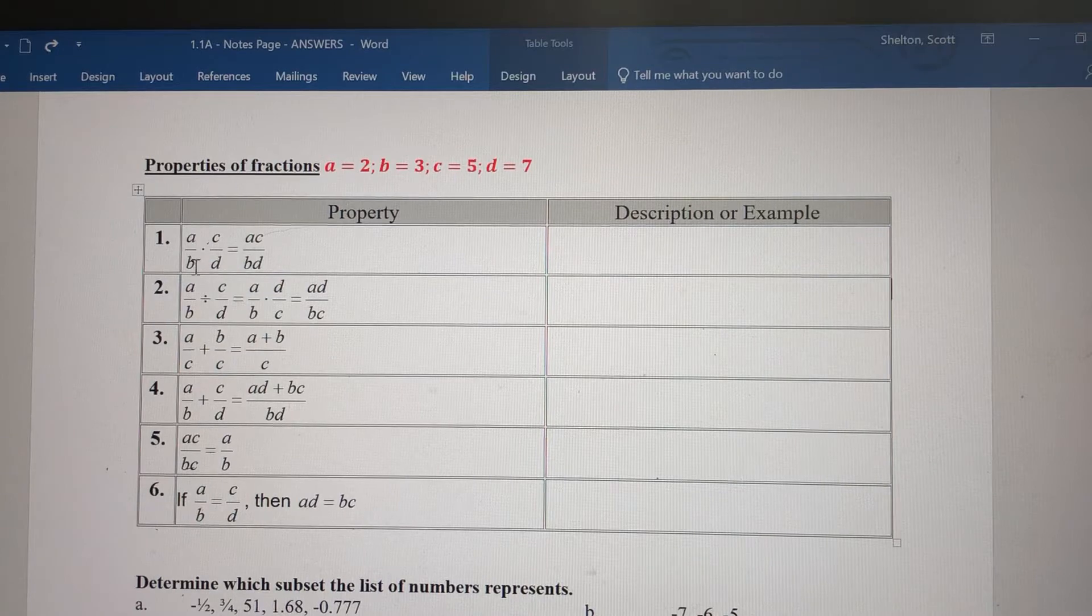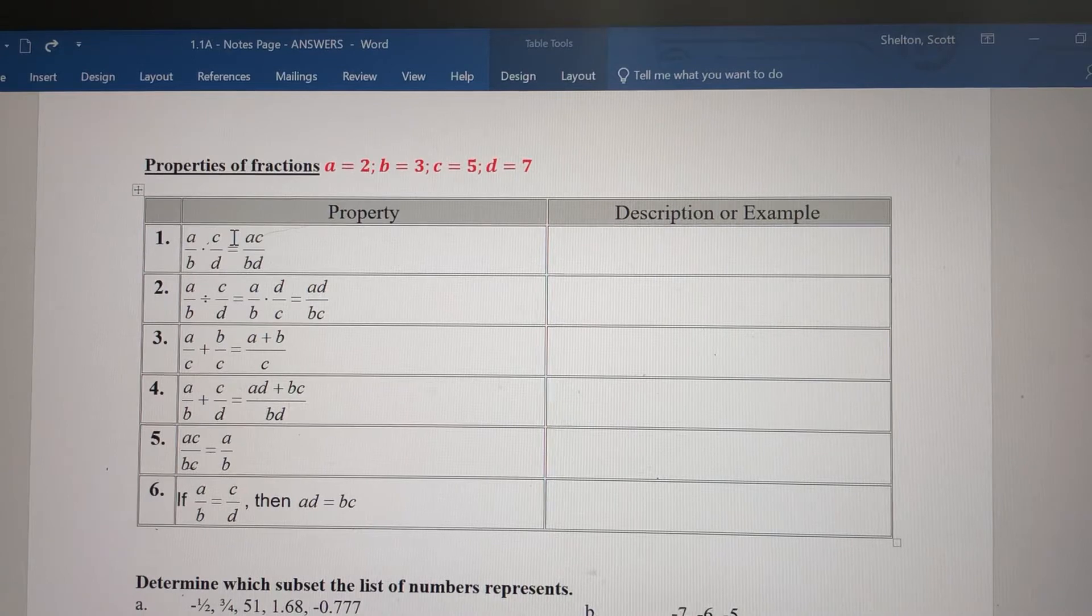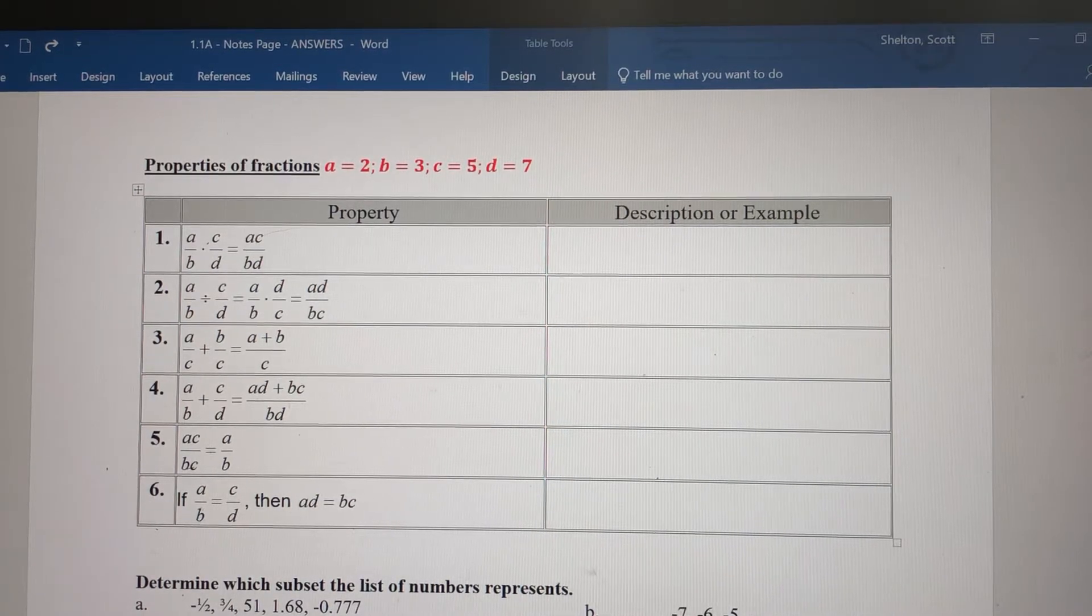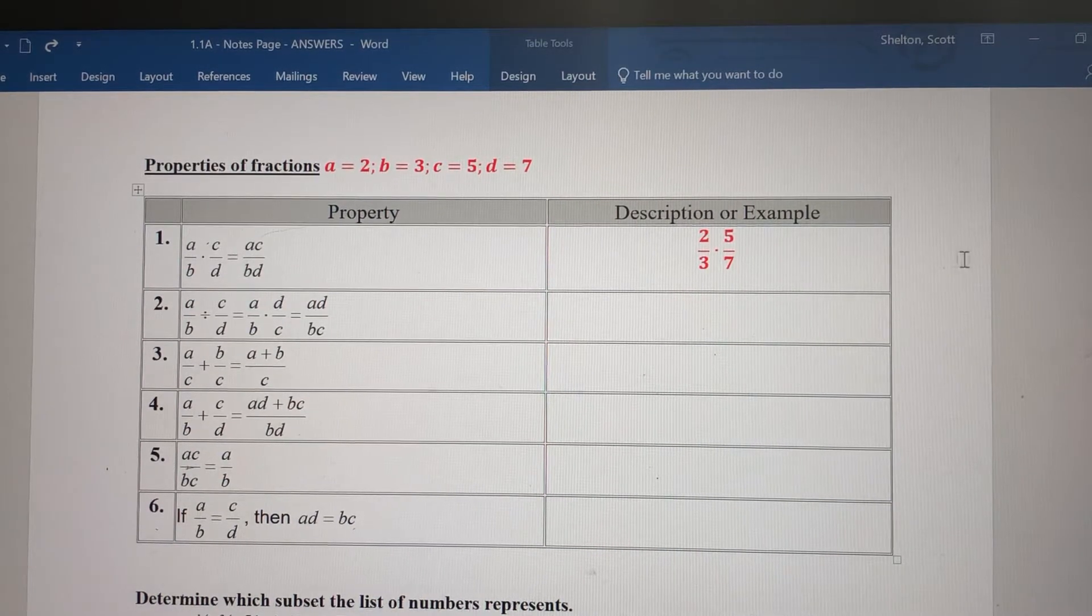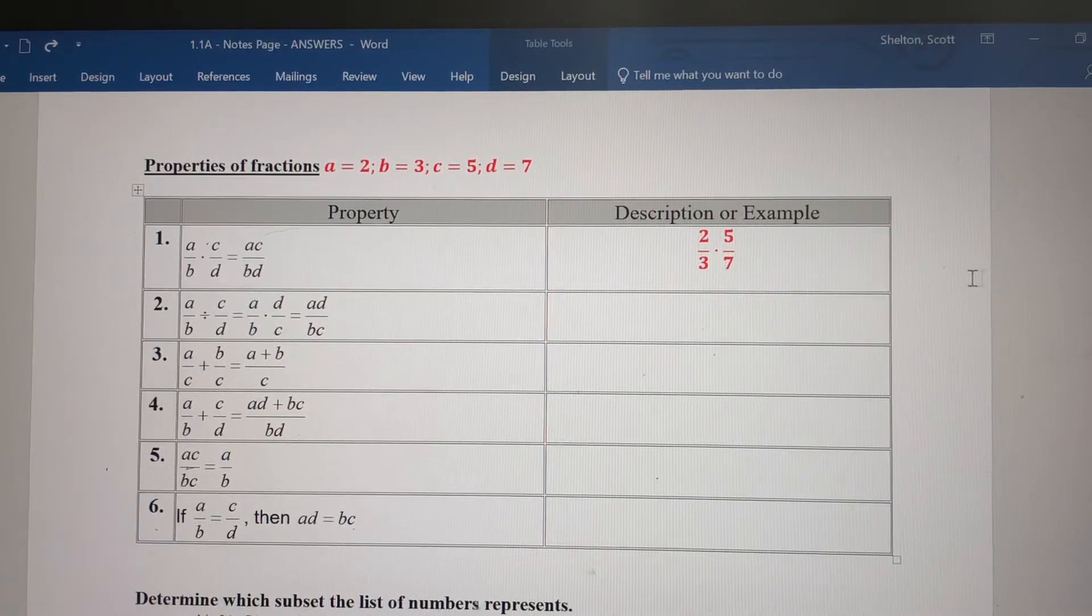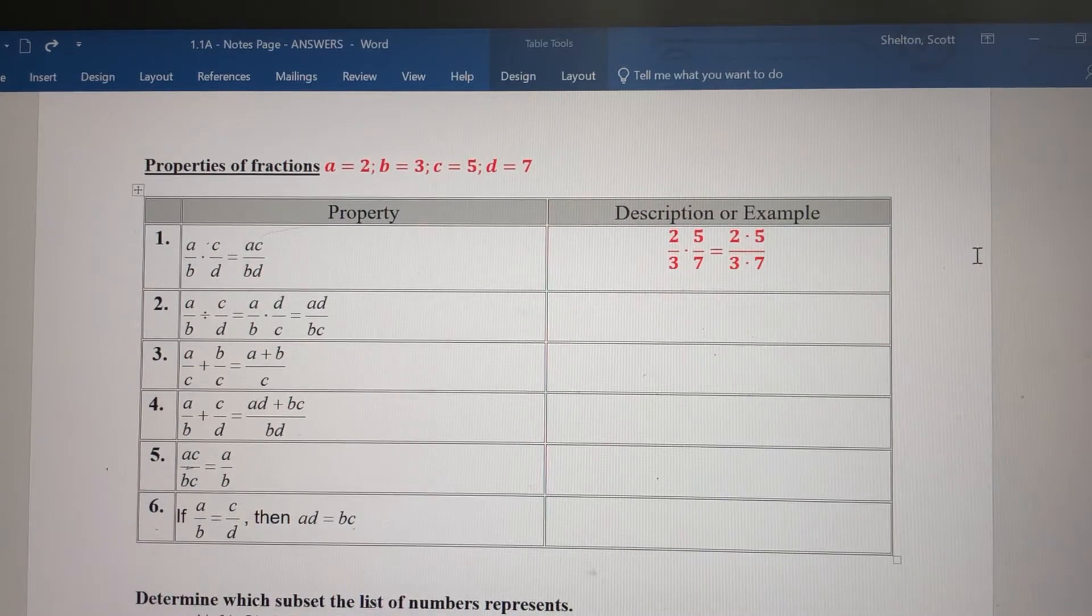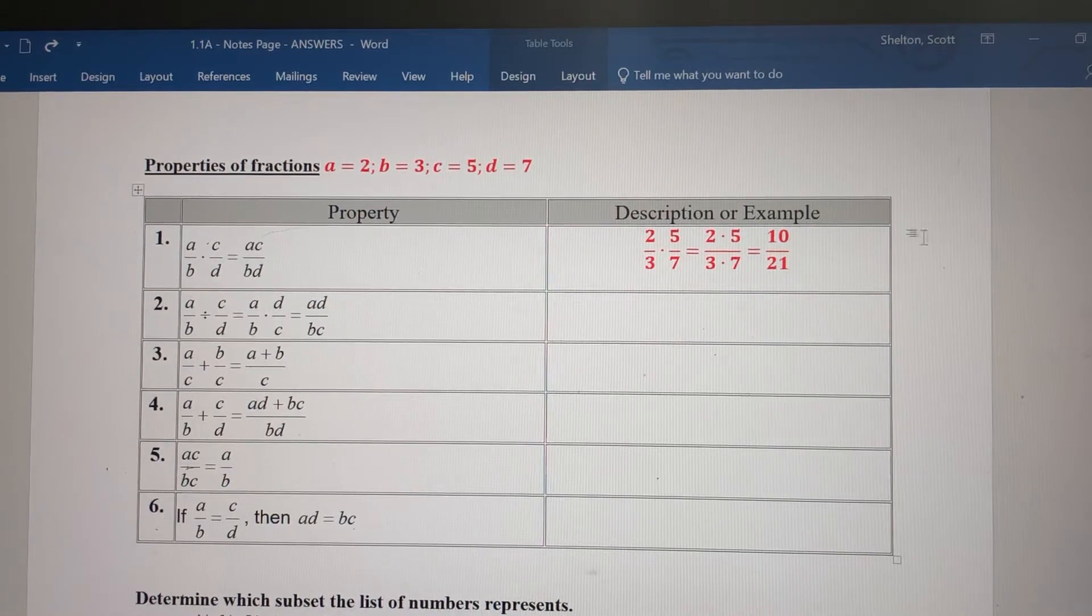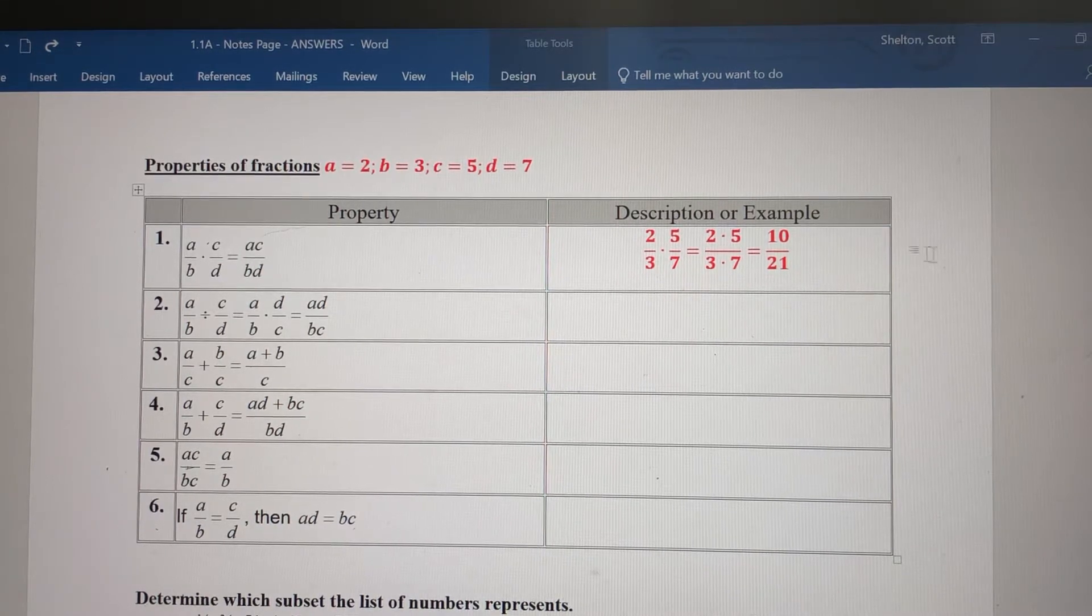The first property: when you multiply a fraction times a fraction, multiply numerator times numerator and denominator times denominator. A times C is AC, and B times D is BD. Let's plug in our values. 2/3 times 5/7 - multiply the numerators 2 times 5, and denominators 3 times 7. 2 times 5 is 10, 3 times 7 is 21. Always check if you can simplify. 10/21 can't be simplified, so that's the answer.